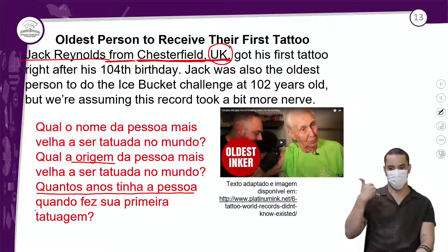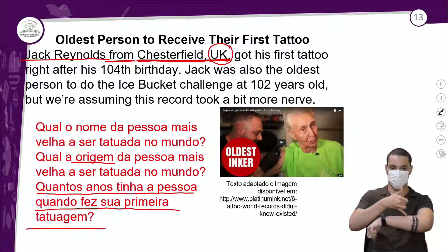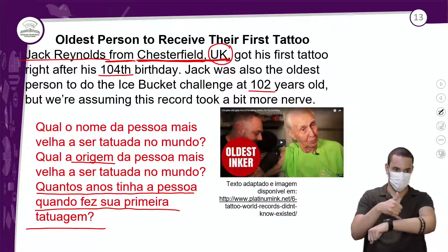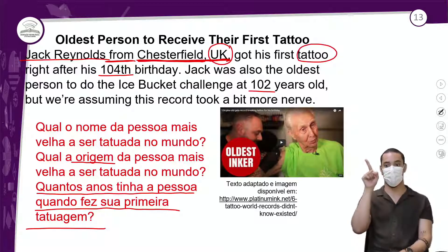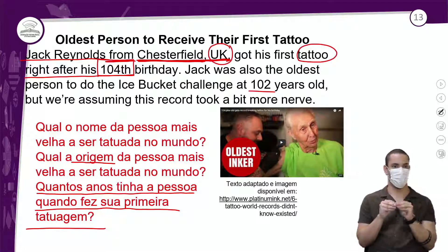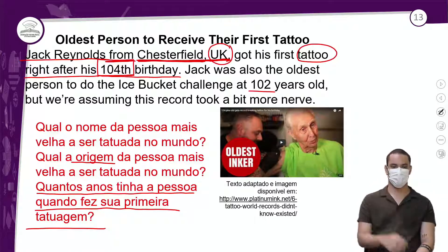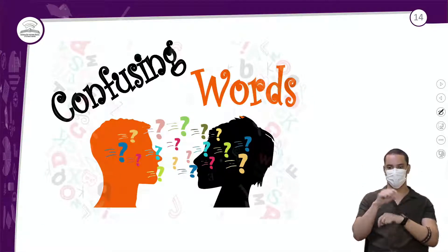Quantos anos tinha a pessoa quando fez sua primeira tatuagem? A gente viu que temos duas idades: 104 e 102. Mas só uma é quando ele fez a sua primeira tatuagem. Procura a palavra tatuagem no texto — escaneia a palavra. Aqui está: tatuagem. Logo depois dela aparece o número — 104. Só pode ser a idade em que ele fez a tatuagem. Perceba que aqui eu fui mais específico no texto — apliquei o Scanning.